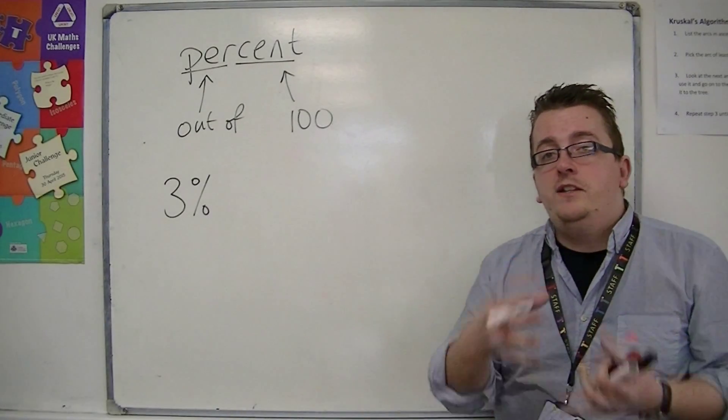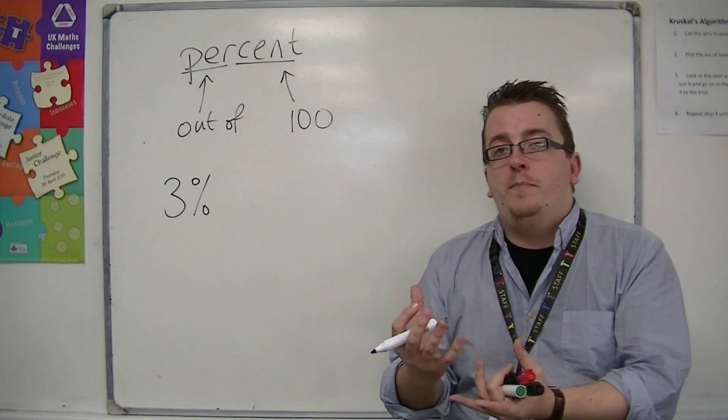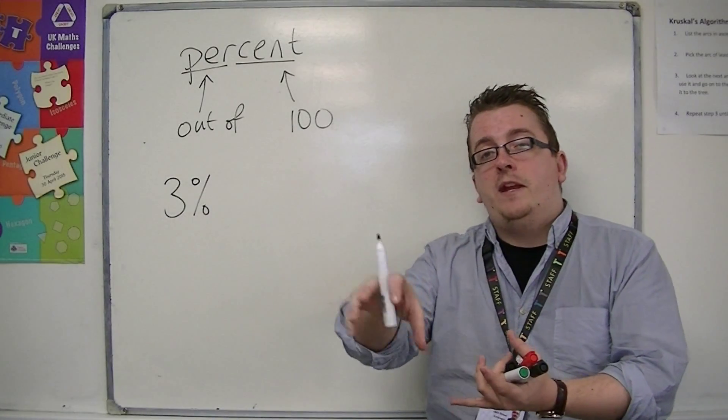So, if we want to find three percent of a quantity, we divide it up into a hundred pieces, and then pick three of them.